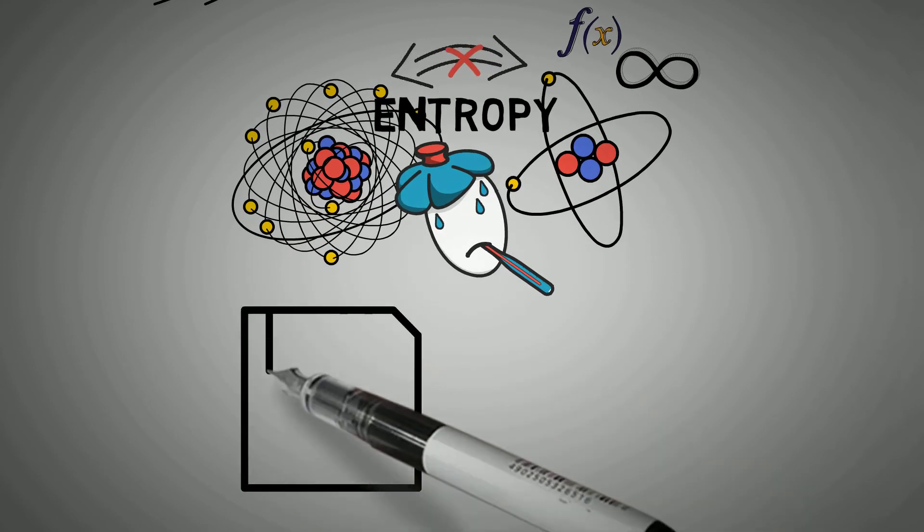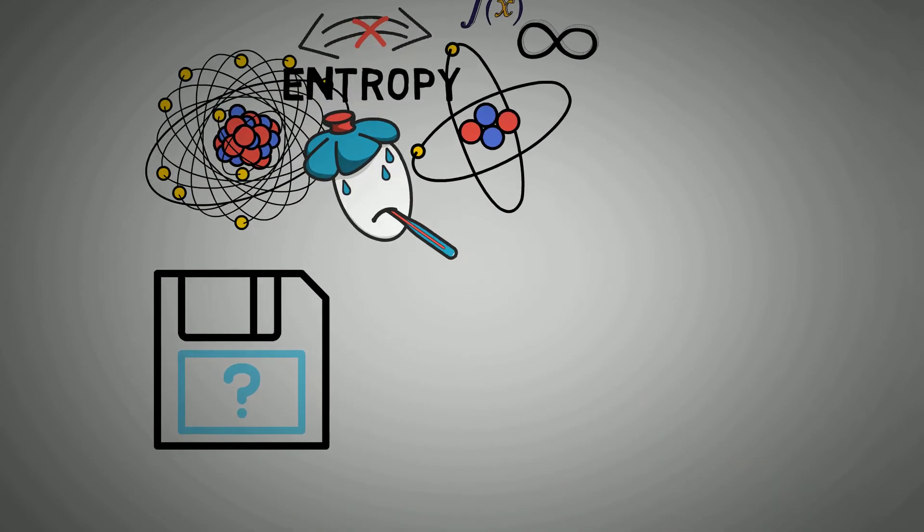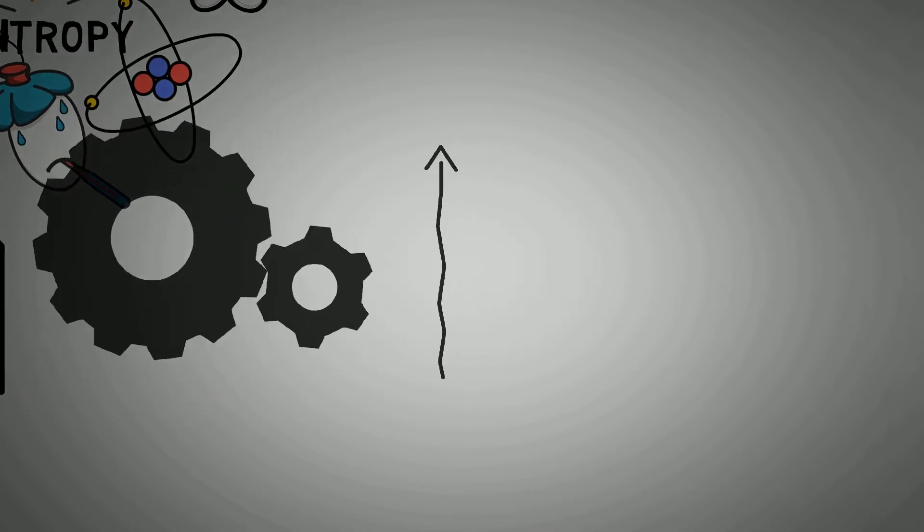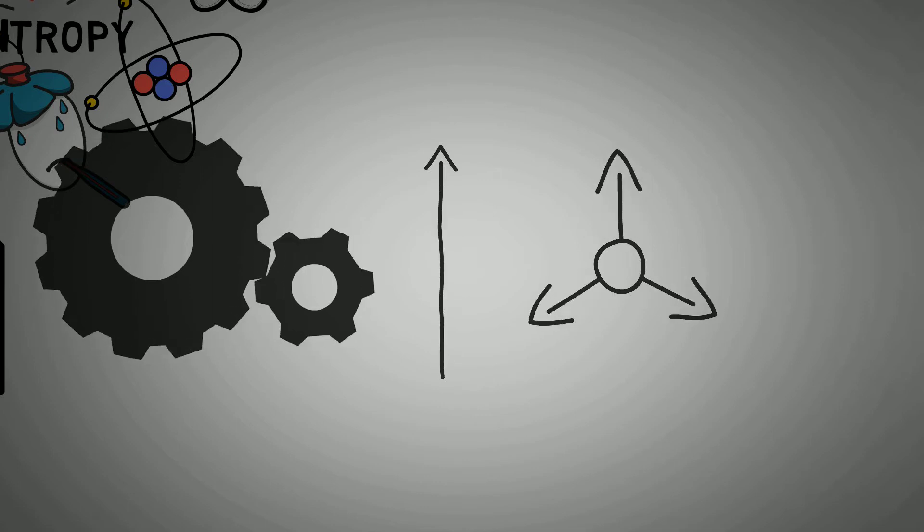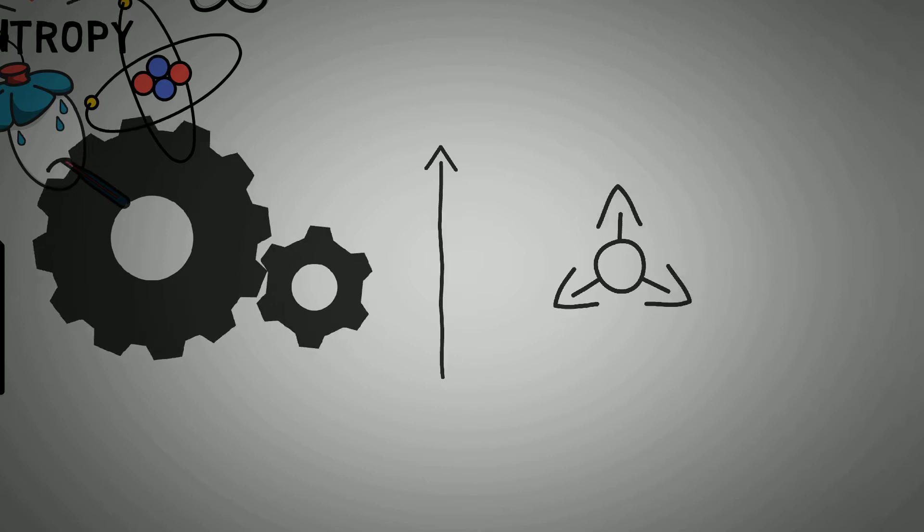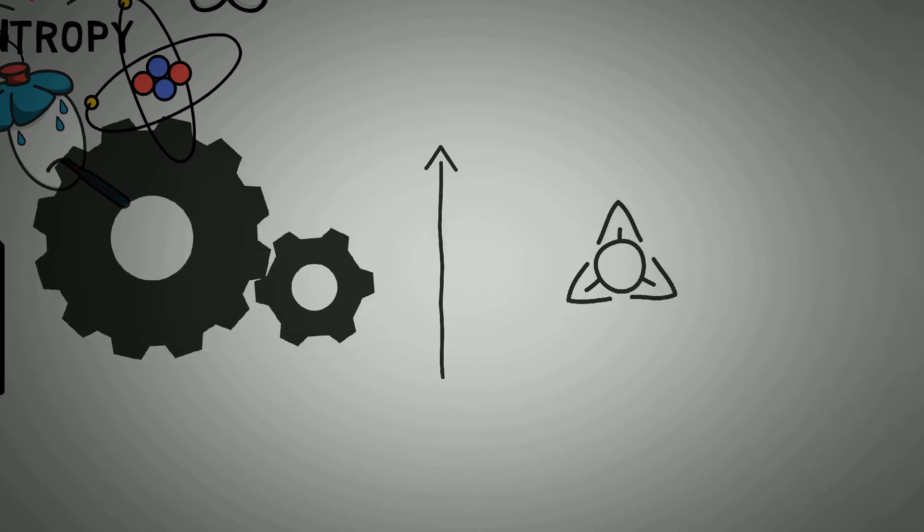Why does entropy matter for your life? Here's the crucial thing about entropy: it always increases over time. It is the natural tendency of things to lose order. Left to its own devices, life will always become less structured.